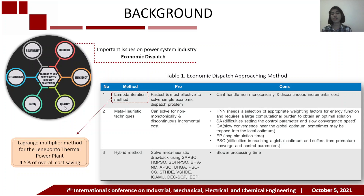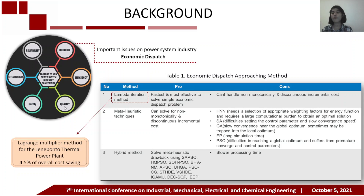Third, the hybrid method. This method can solve meta-heuristic drawbacks using a combination of meta-heuristic techniques such as H-A-B-S-O, H-G-B-S-O, and others. But this method has a slower processing time.